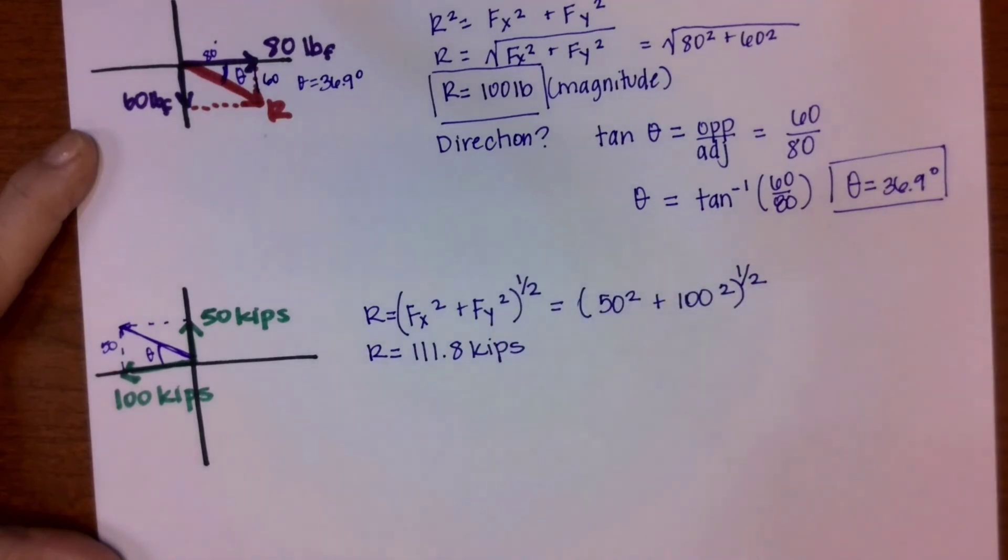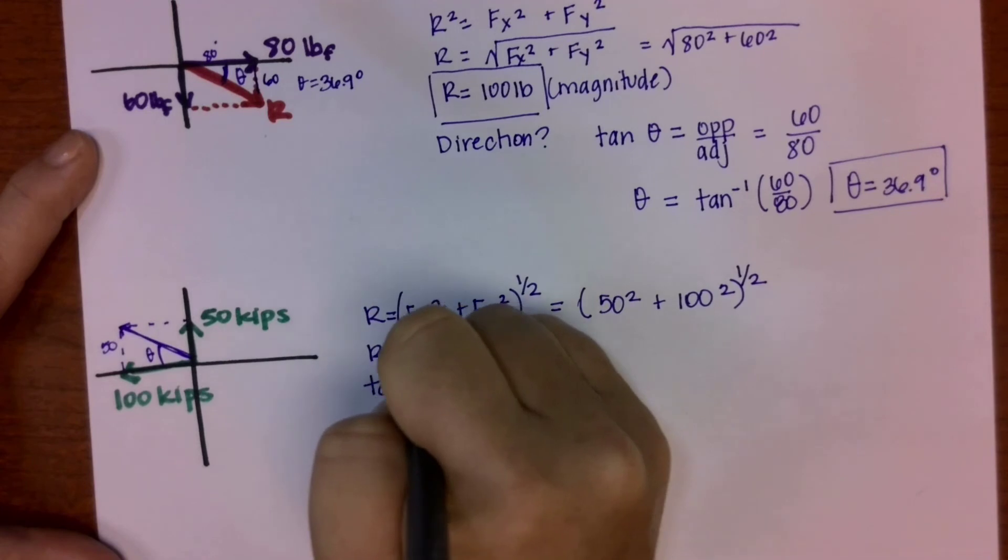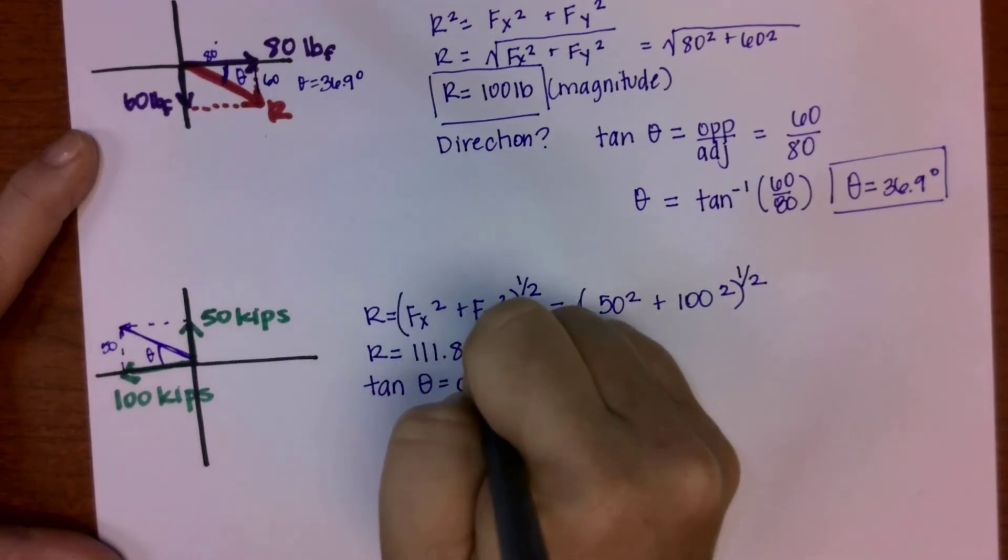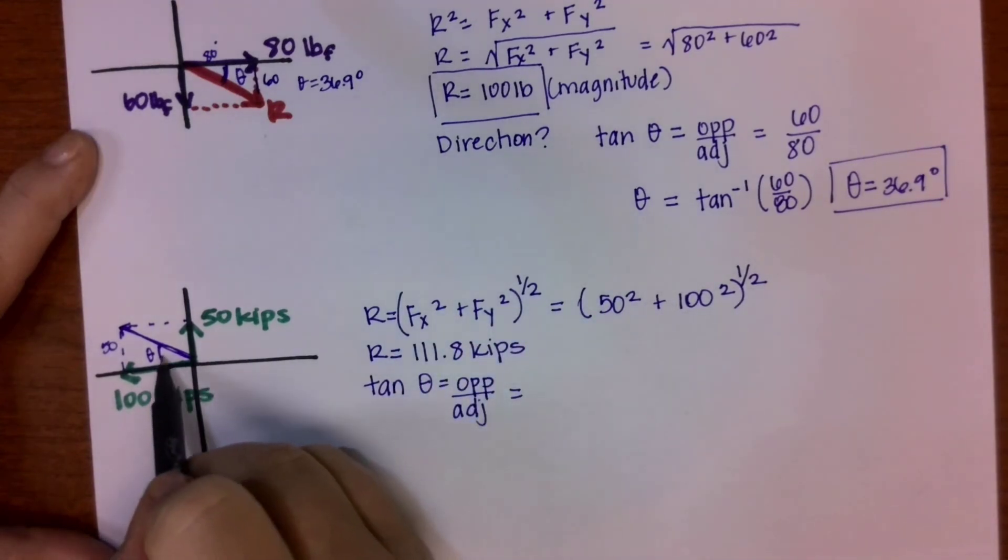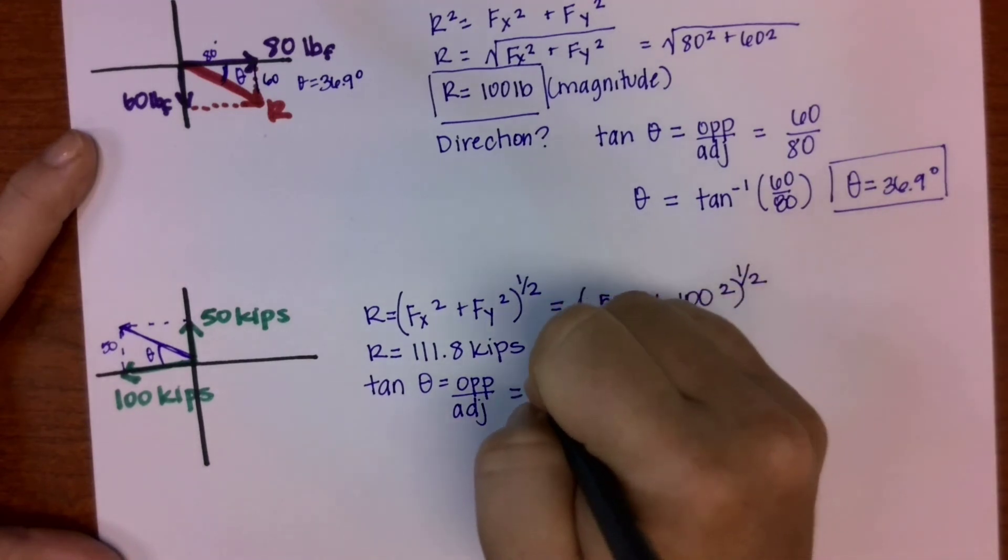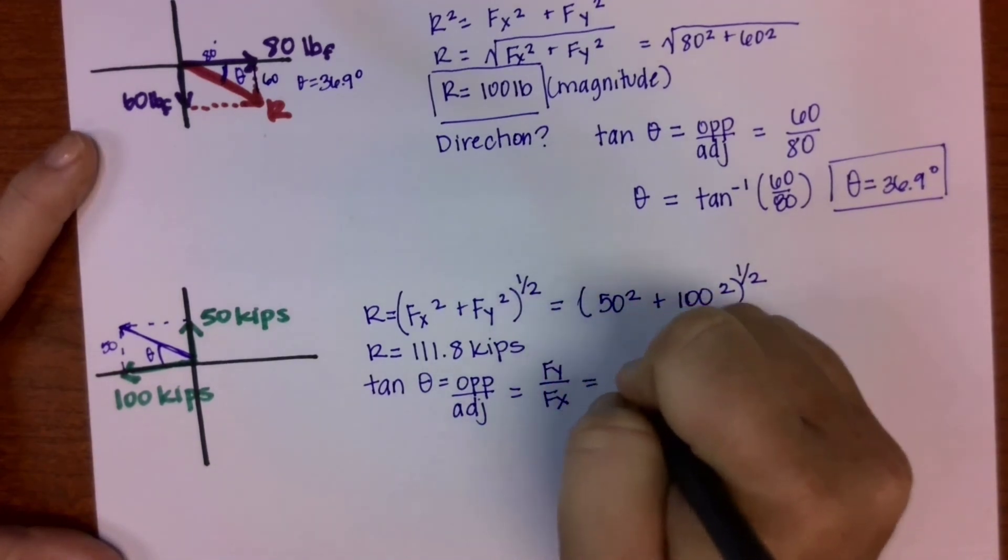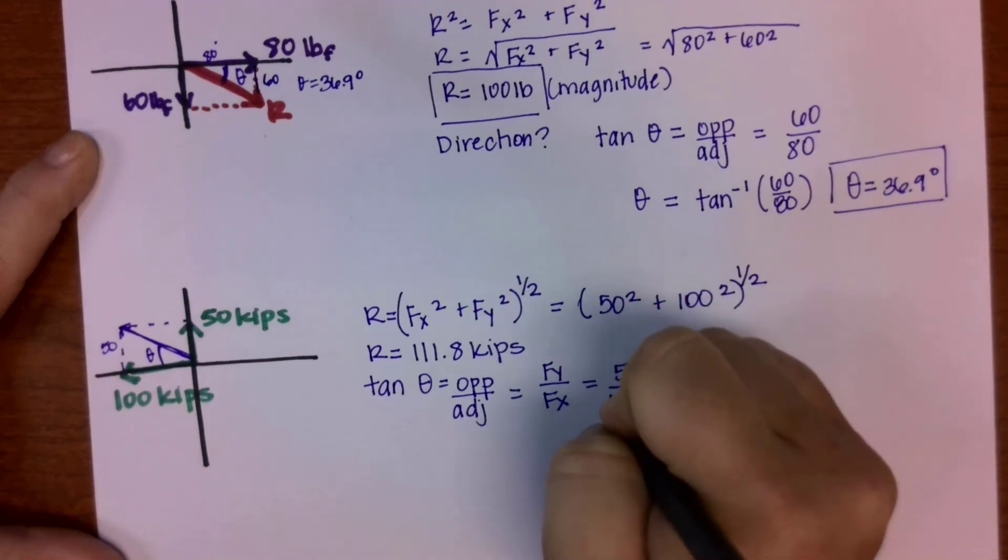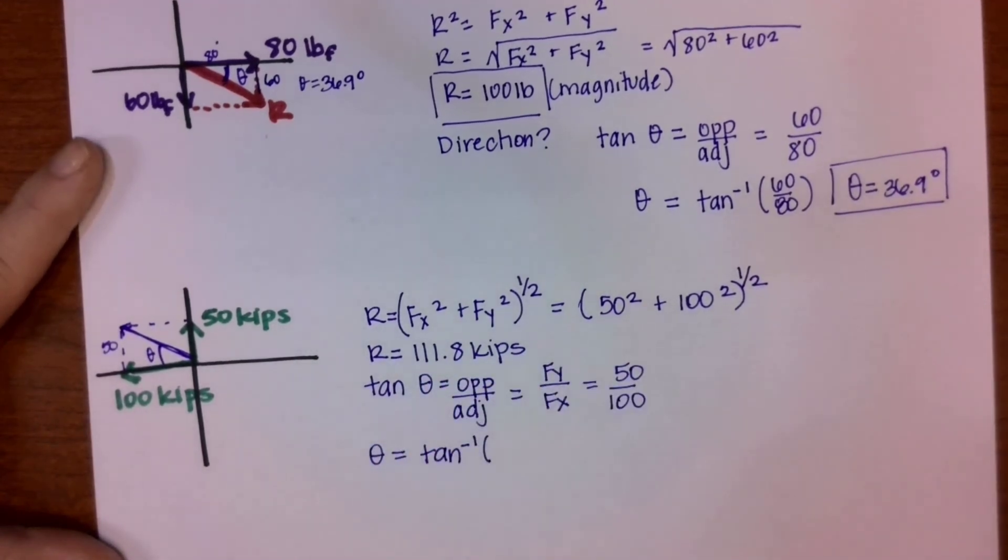But again, now I only have the magnitude, and I need to get that angle to have a direction. So I'm going to use that same trick with tangent. Tangent theta is going to be opposite over adjacent. Note that if we look at it here, what we have is that it's a triangle where fy is the opposite and fx is the adjacent. So that's going to be the tangent of theta is 50 over 100. So theta is going to be the inverse tangent or arc tangent of 0.5.